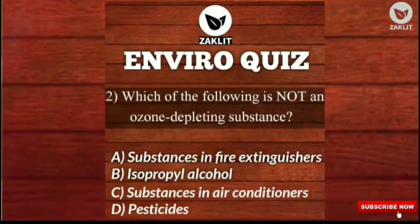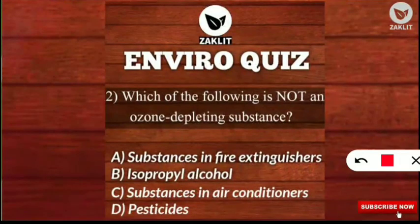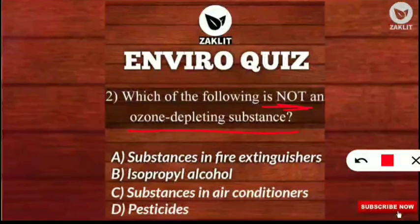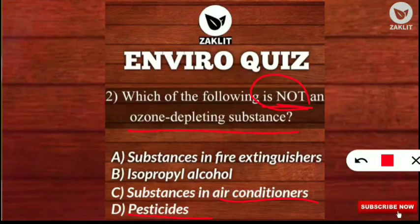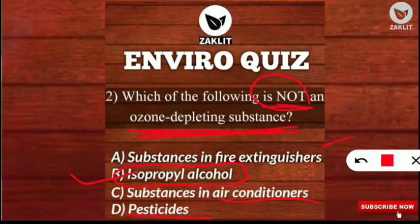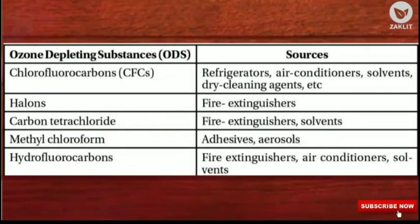The second question is on ozone: which of the following is not an ozone depleting substance? The options are substances in fire extinguishers, isopropyl alcohol, substances in air conditioners, and pesticides. The correct answer is isopropyl alcohol — it is not an ozone depleting substance. The other three options are ozone depleting substances.